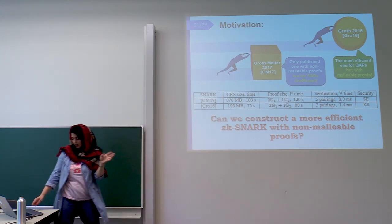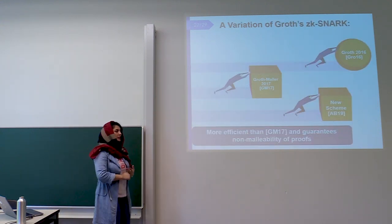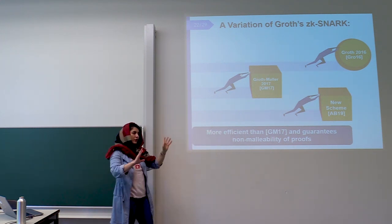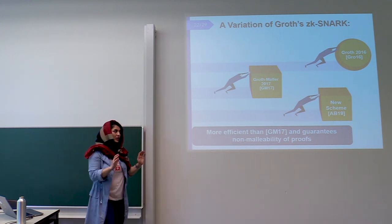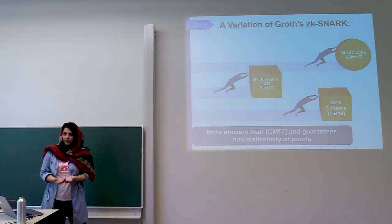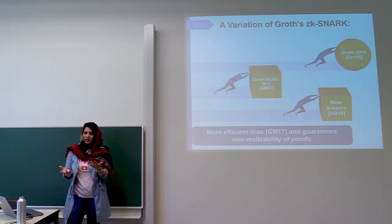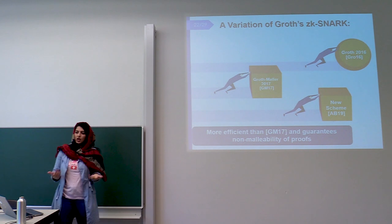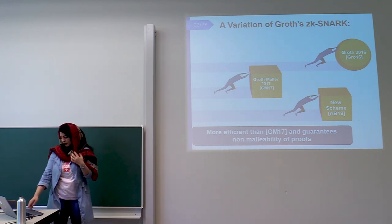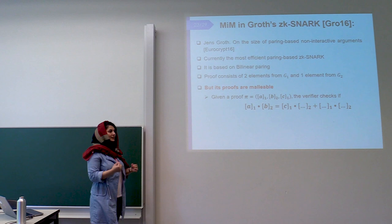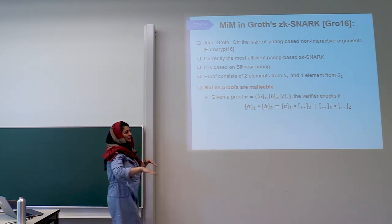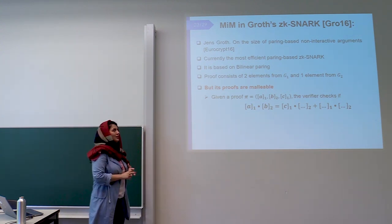Now it's time to see what the problem with Groth's scheme is and what attacks it faces, since we tried to make it non-malleable. One of the attacks is a man-in-the-middle attack. Let me start by giving a high-level overview of Groth's zkSNARK. Groth works for QAP circuits and is based on bilinear pairings. It consists of two elements in the first group and one element in the second group. You can see here that this is the proof of Groth.